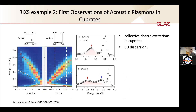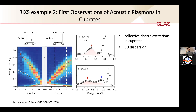RIXS is also sensitive to collective charge excitations — a very unique capability. In a RIXS intensity map of an electron-doped cuprate, we see two branches of excitations: one is the magnetic excitation (white markers), and the other is the so-called acoustic plasmon (red markers), which has a very steep dispersion that changes with in-plane momentum. So RIXS has capability in both the magnetic and charge sectors.